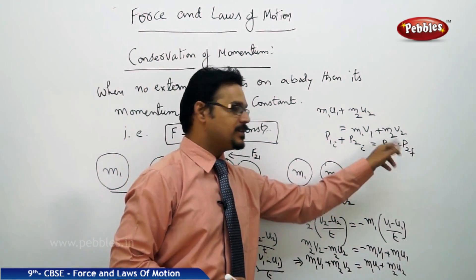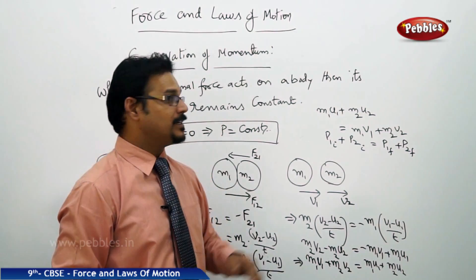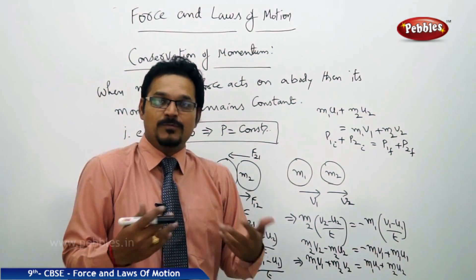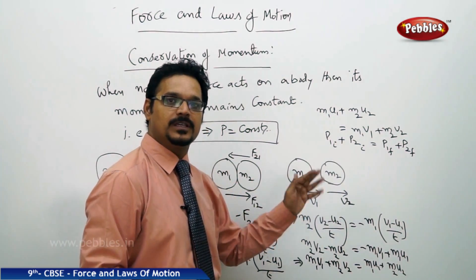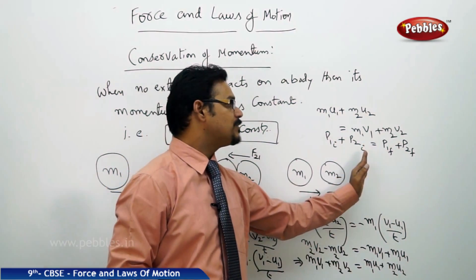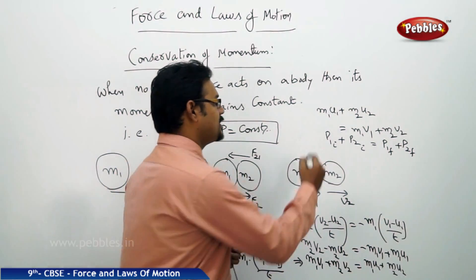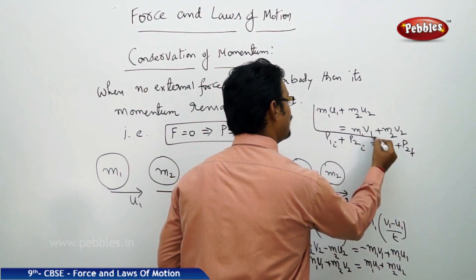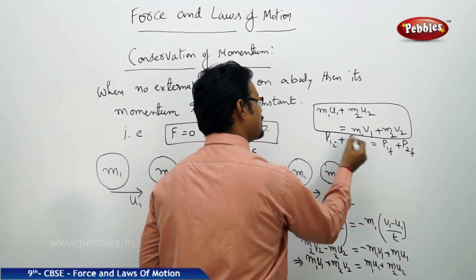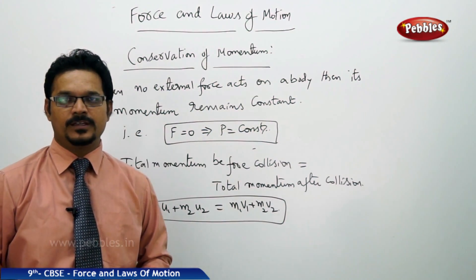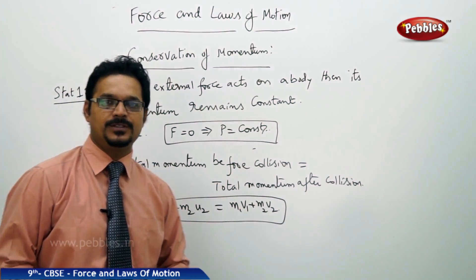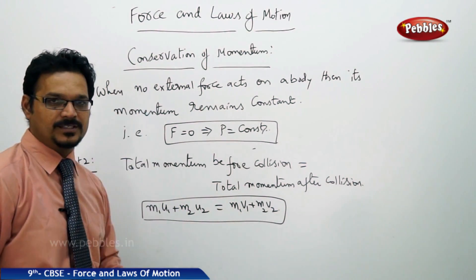Hence, the conservation of momentum can also be stated as the total momentum before collision equals total momentum after collision. And this is the very very important formula for you for solving numerals. You can see the two statements of conservation of momentum. The first one we already discussed.